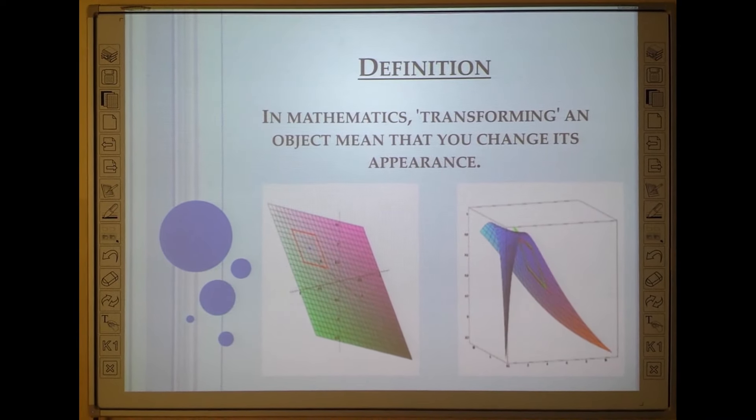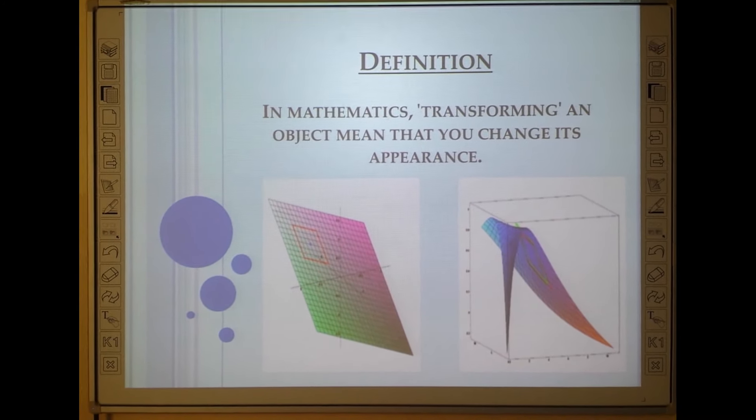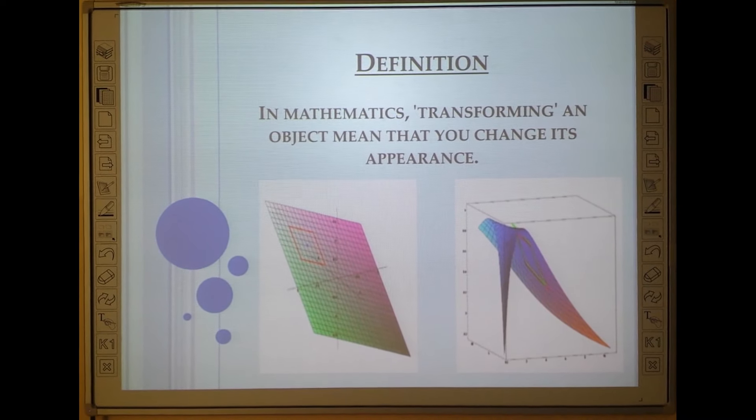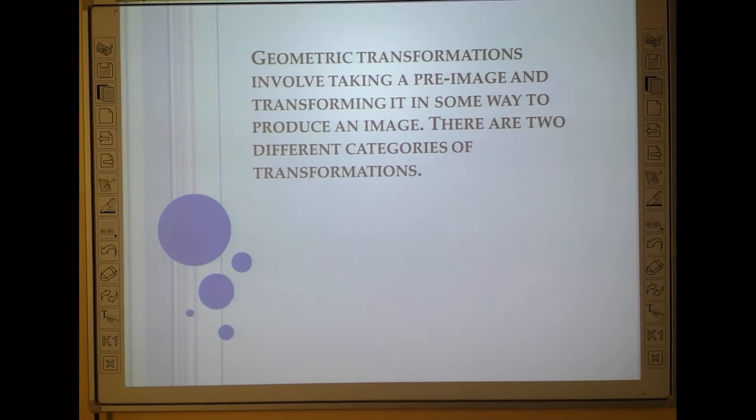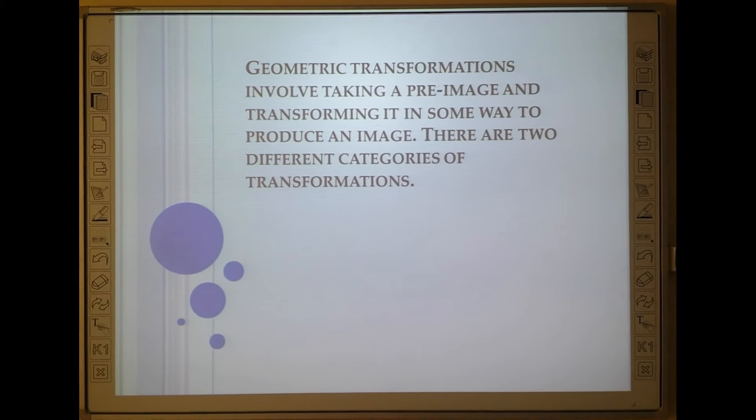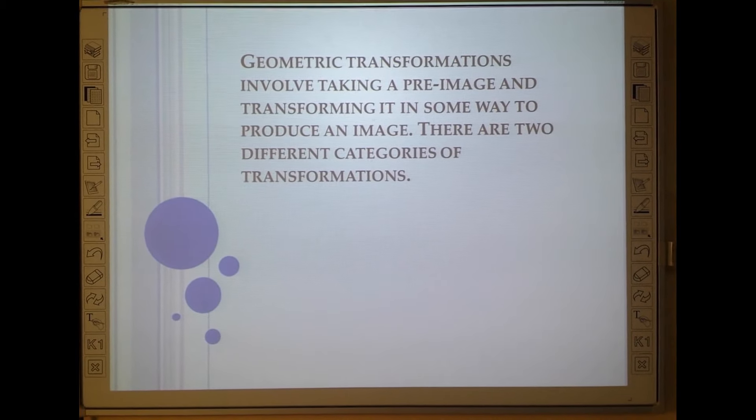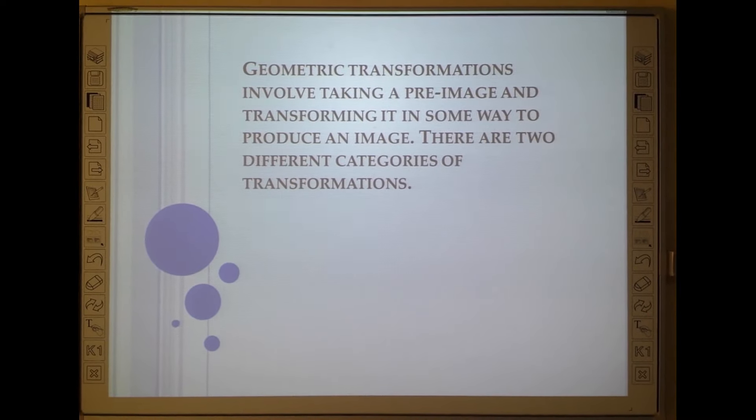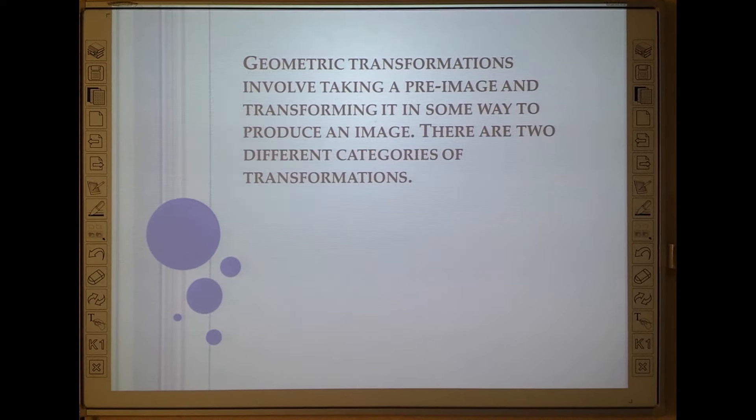What are Geometrical Transformations? In mathematics, transforming an object means that you change its appearance, its shape, its size. Geometrical transformations involve taking a preimage, that is an object, and transforming it in some way to produce an image of that particular object. It might be a figure, it might be a 3D object.